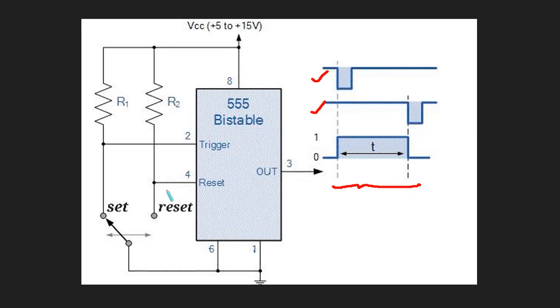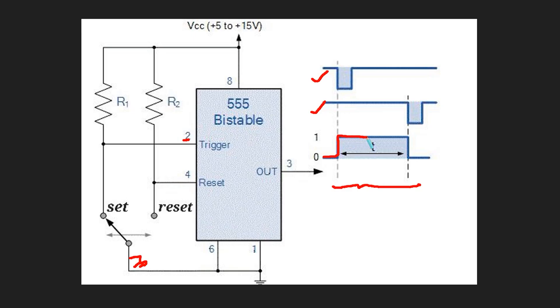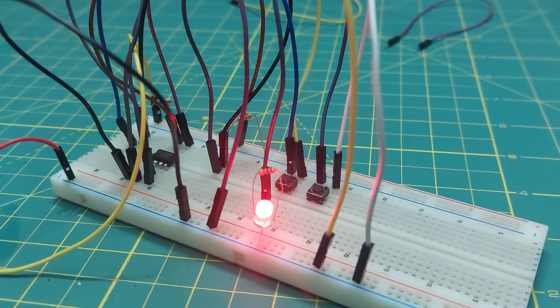When you connect pin 2 to ground, the output stays on permanently. But when you ground pin 4, the output turns off.